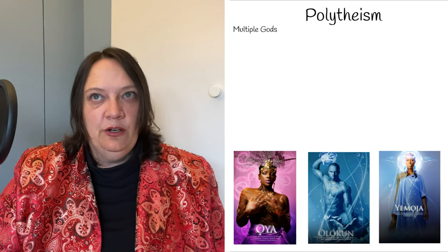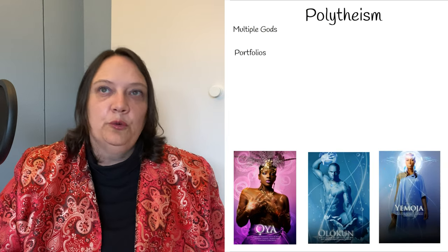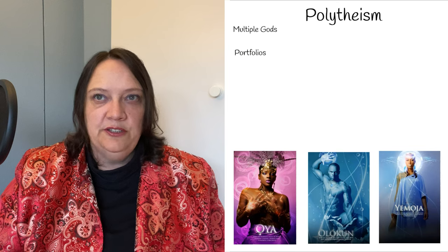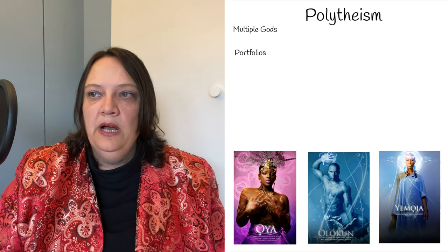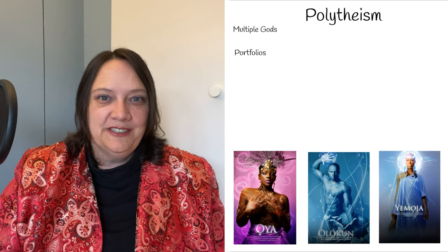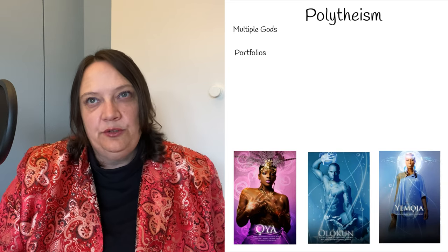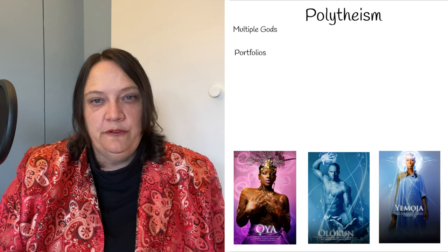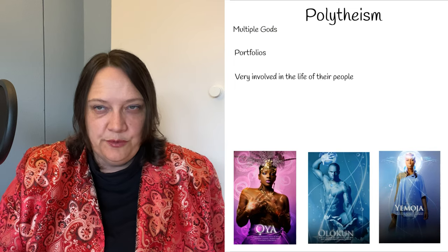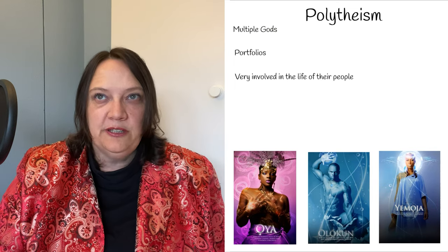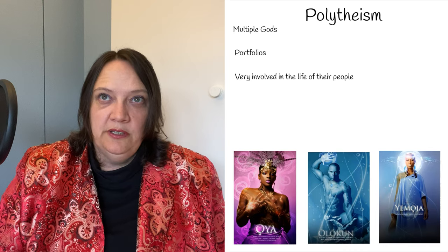How polytheism generally works is each god has a portfolio they're responsible for covering — a god of the weather like a Zeus equivalent, a god of the sea. In the Orisa example that's Olokun, who by the way is a non-binary god — how cool is that? The defining characteristic, besides there being multiple gods with multiple portfolios, is that these gods are quite often very involved in their worshippers' lives, coming to visit and causing mayhem and havoc.